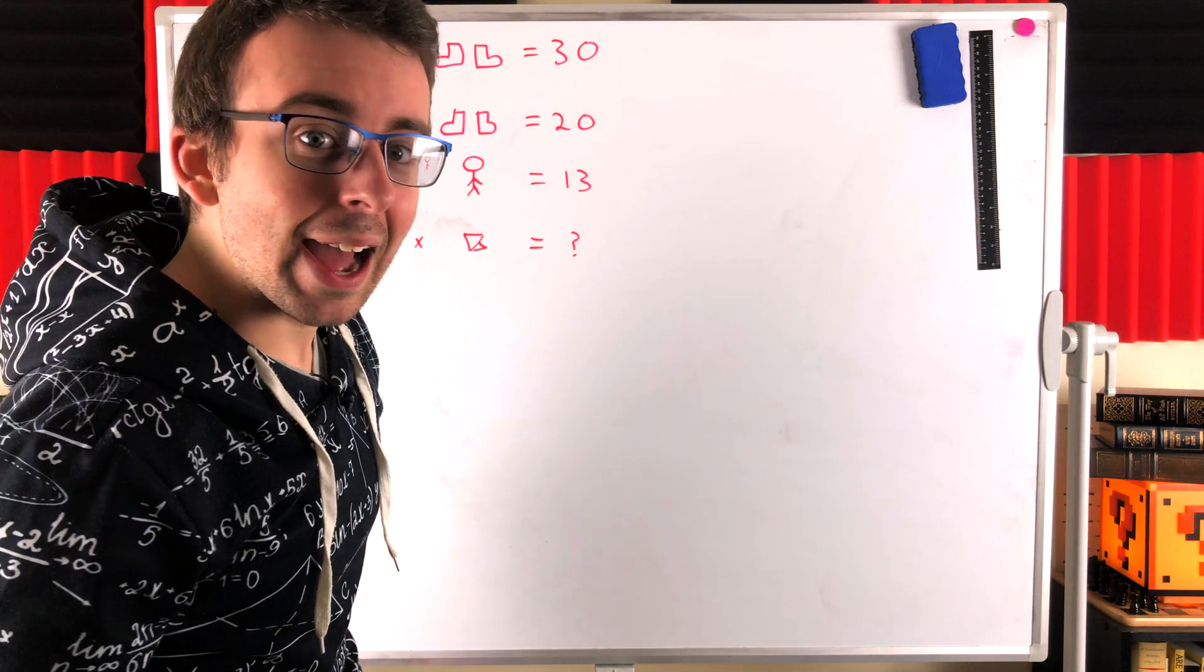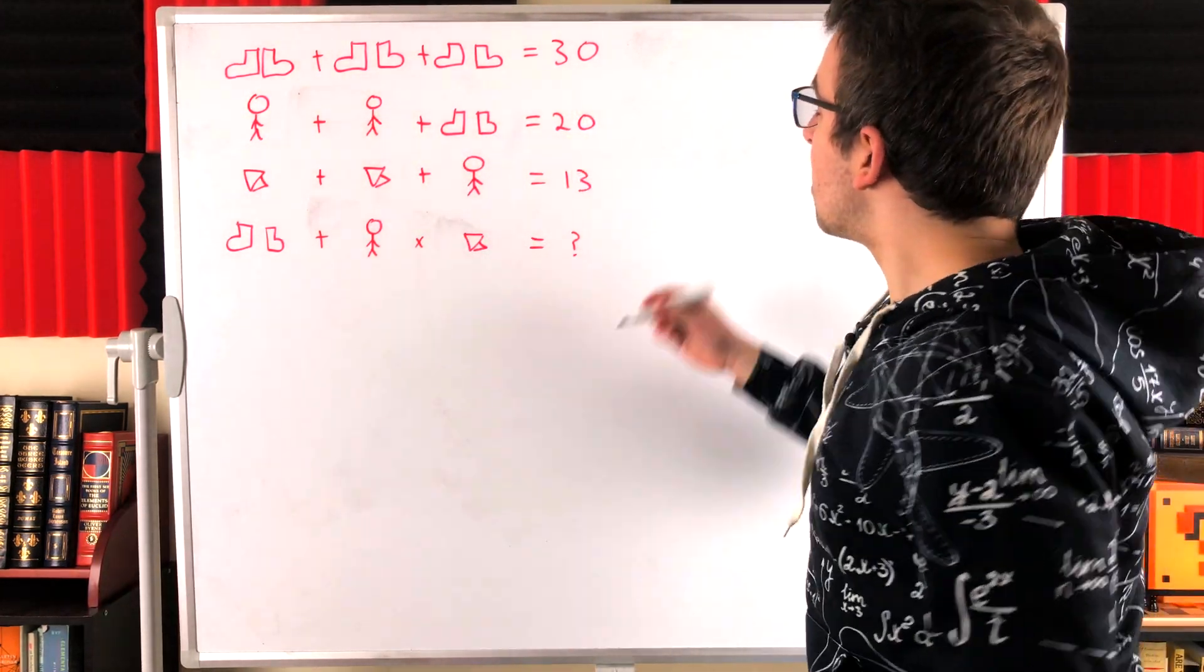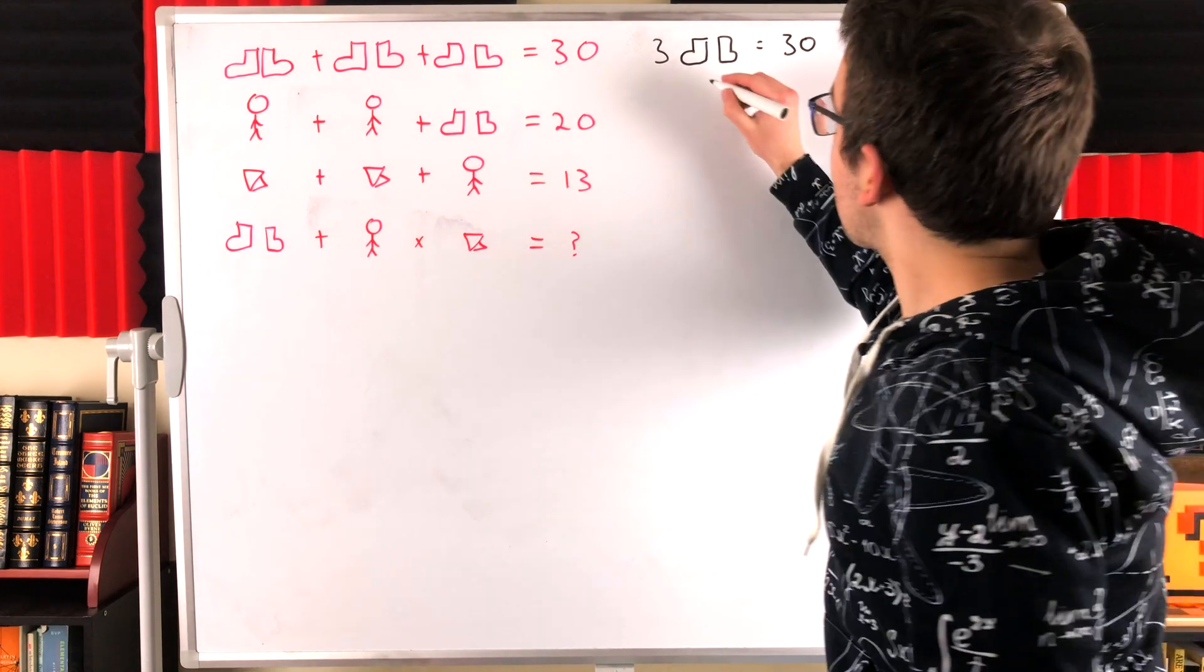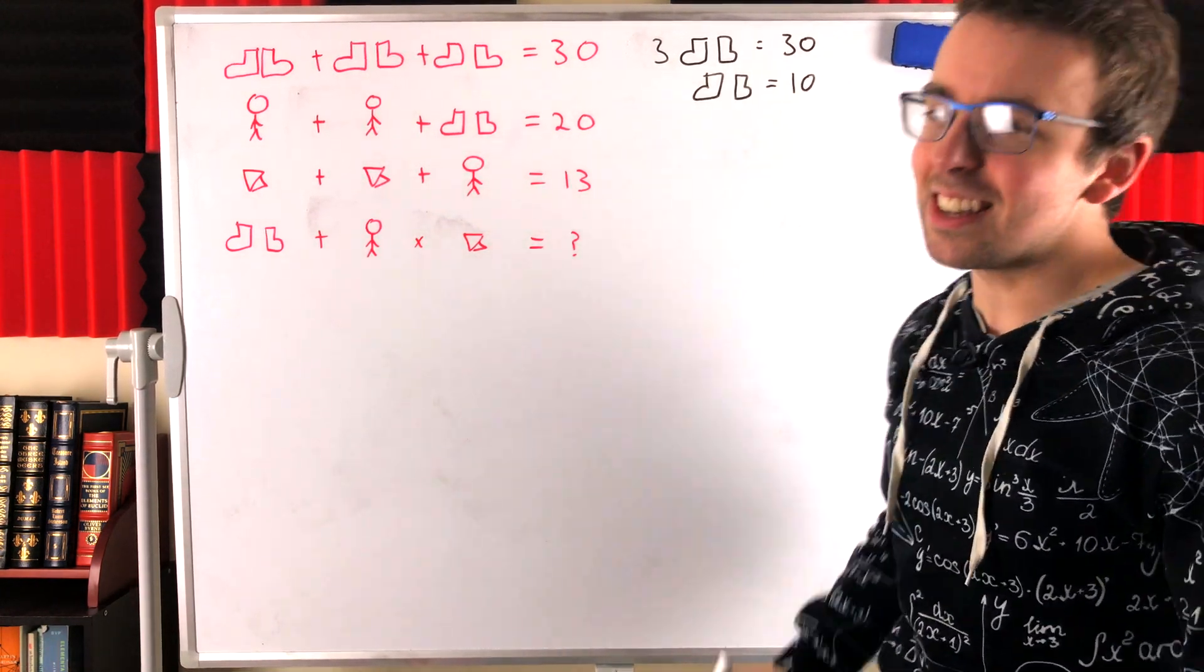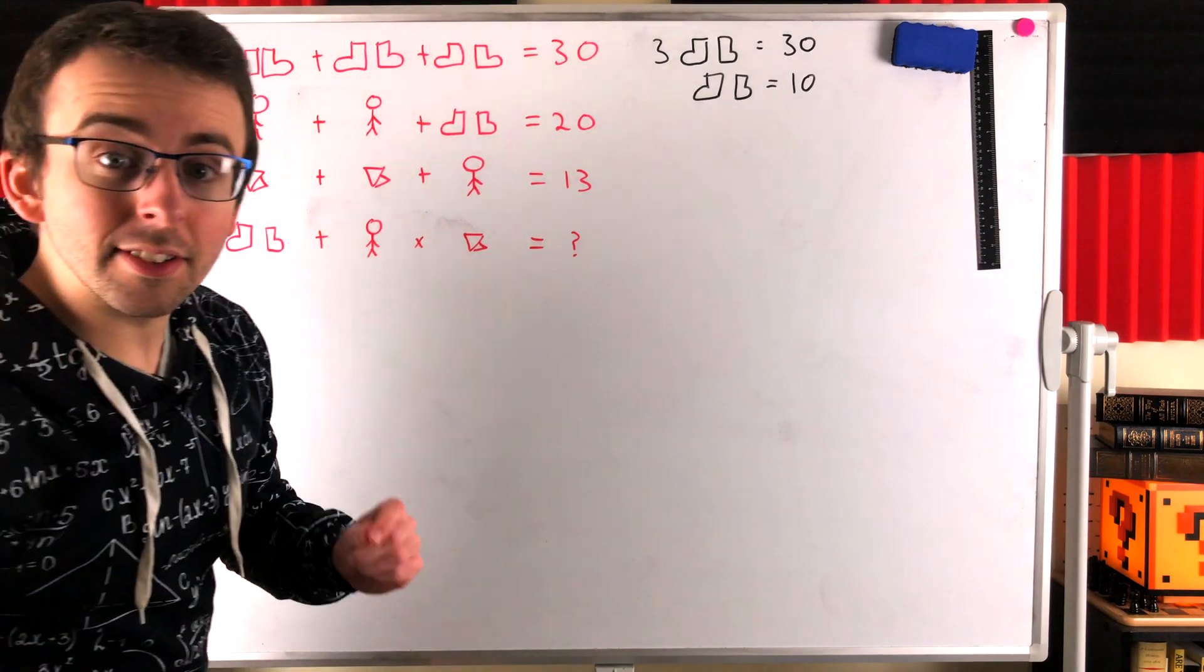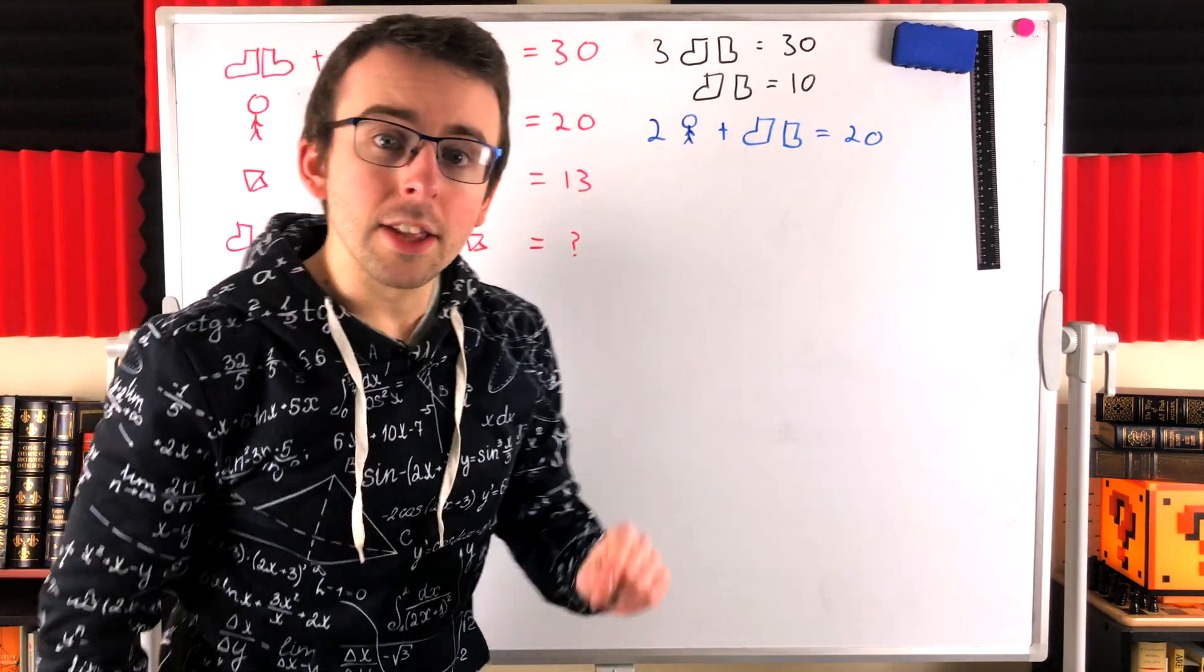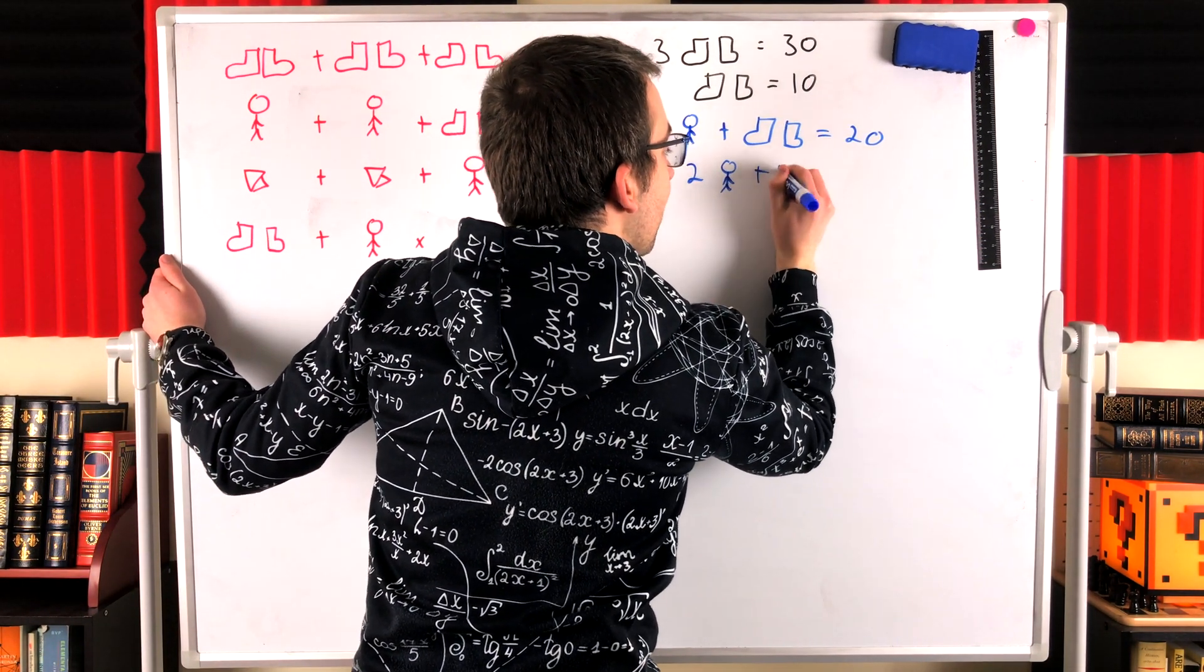Easy peasy, let's solve the first equation. Boots plus boots plus boots equals 30, so three pairs of boots is equal to 30. Divide both sides by 3, so pairs of boots is equal to 10. Now we can solve the next equation. Faceless stick figure plus faceless stick figure plus boots is equal to 20, so two faceless stick figures plus boots equals 20. We know the boots equals 10, so two faceless stick figures plus 10 equals 20.